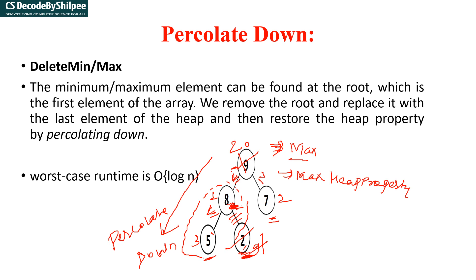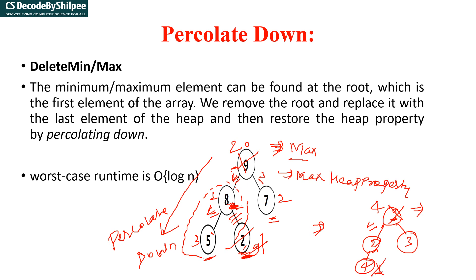Suppose this is a min heap: 1, 2, 3, 4. If I say delete min — in a min heap we know the minimum element is always at the root. So 1 is going to be replaced by 4. Now you check: is 4 less than 2 and 3? You are checking directly at the upper level, then coming to the next level, then the next. You are coming down — checking level 0, then level 1, then level 2. You are coming down, and because of that reason it is called percolate down.